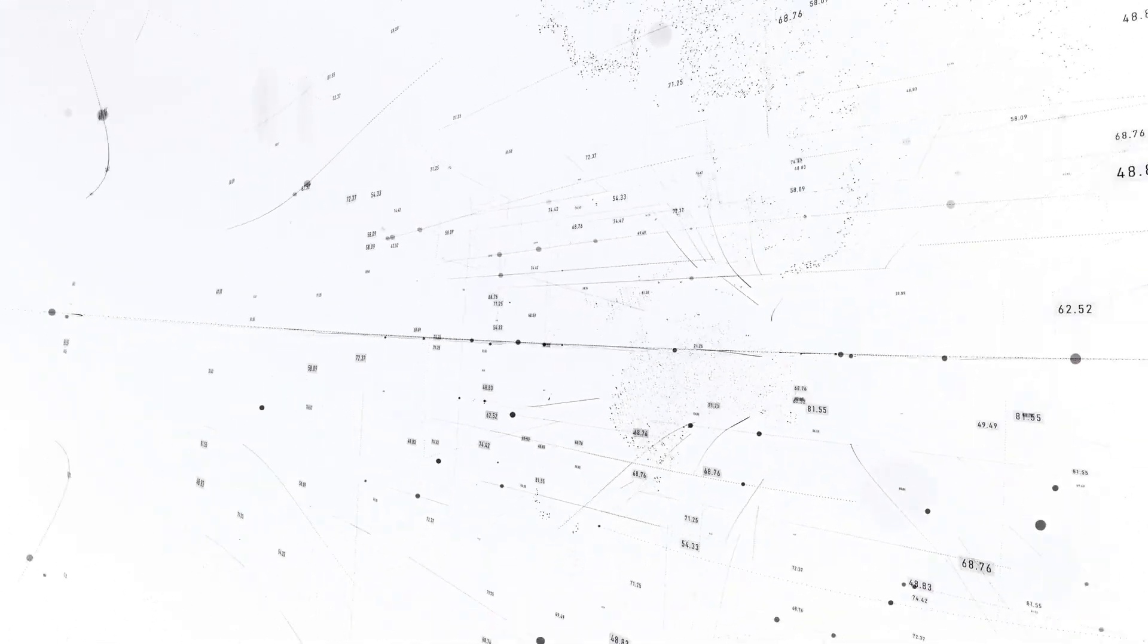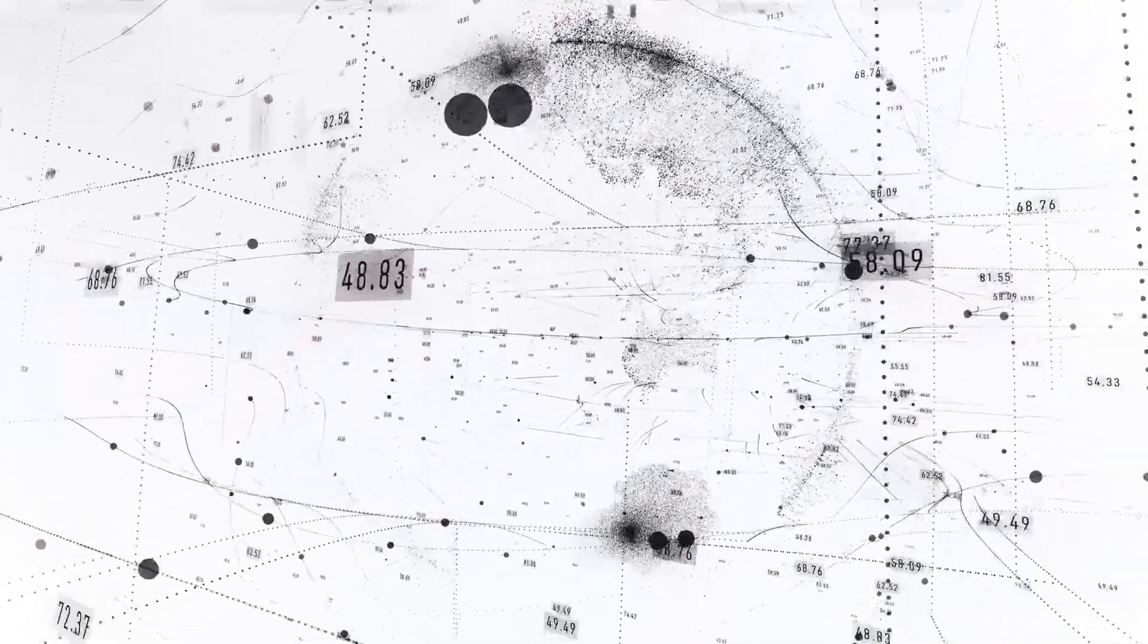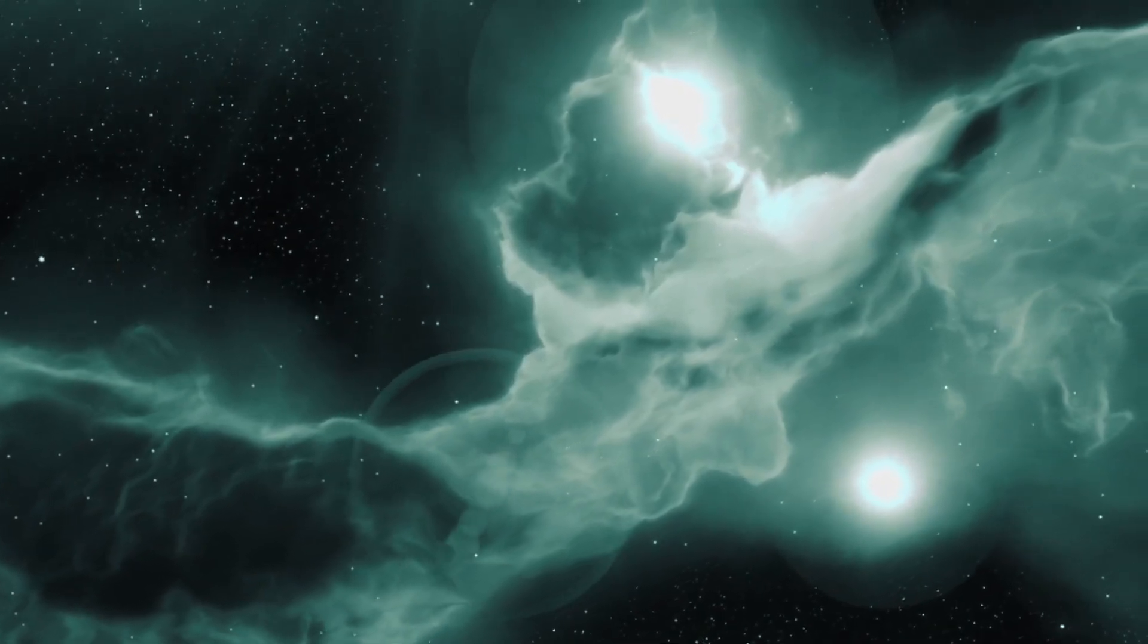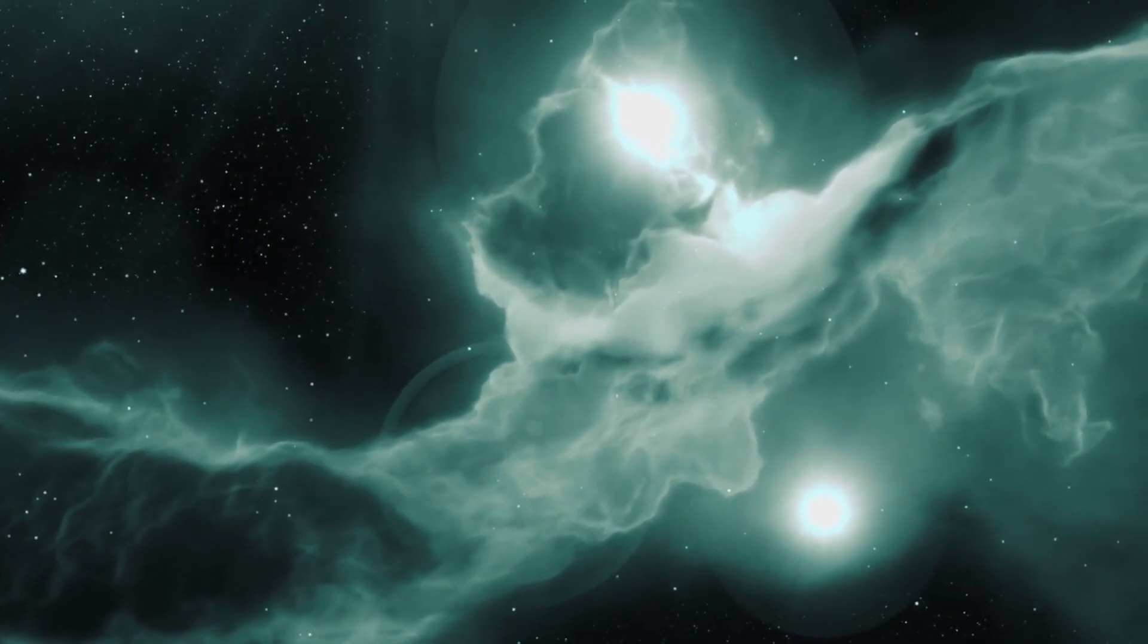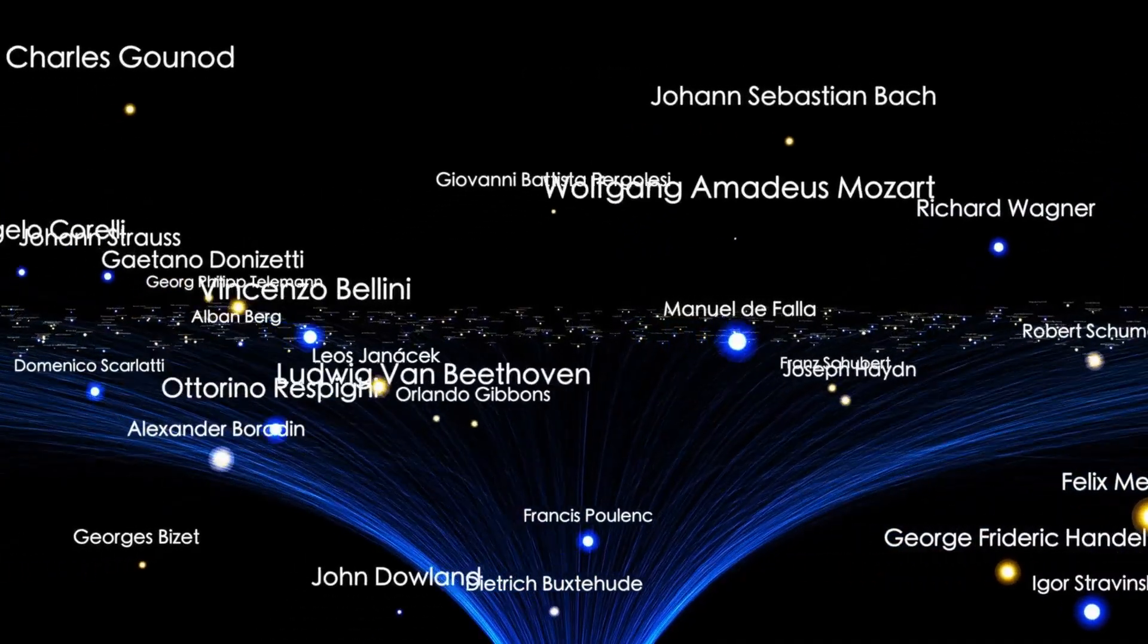Yet despite the rising tension, something even stranger began to happen. The frequency of radio interference across Earth's observatories started synchronizing, all matching 3.I Atlas's rotational pulse. The planet itself was beginning to resonate with the object's signal.